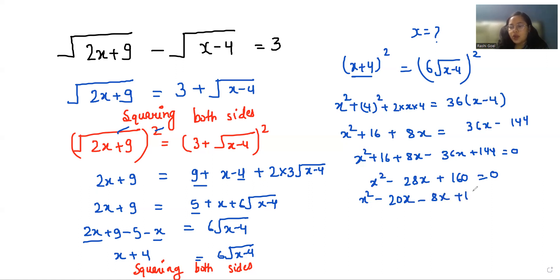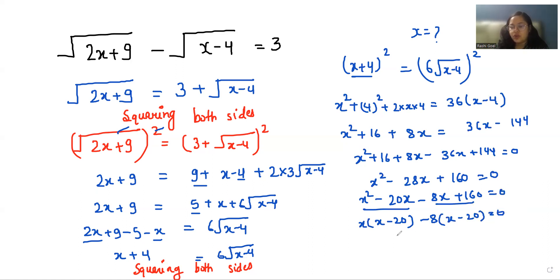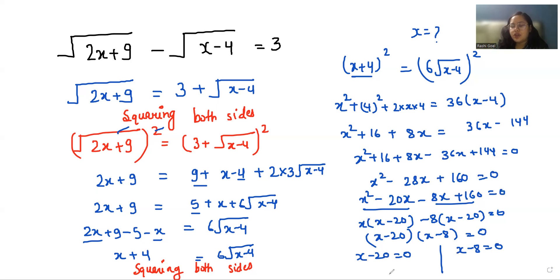We split -28x as -20x - 8x, so x² - 20x - 8x + 160 = 0. From the first two terms I take x as common: x(x - 20), and from the next two terms I take -8 as common: -8(x - 20). Taking (x - 20) as common factor gives (x - 20)(x - 8) = 0. So either x - 20 = 0 or x - 8 = 0, giving x = 20 or x = 8.